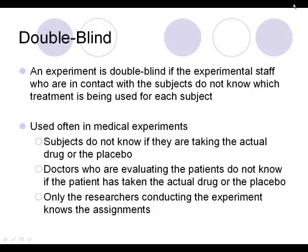Double blind means you're blinded in two ways. The subjects themselves don't know which treatment they were given, and the people evaluating the subjects also don't know which treatment was given. In medical experiments, subjects shouldn't know if they're taking the actual drug or a placebo, and the doctors evaluating patients shouldn't know either, as that might affect their evaluation. Only the researchers conducting the experiment know which assignment went with which person — that is a double-blind experiment.